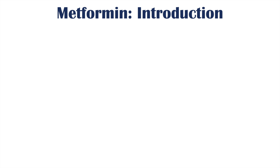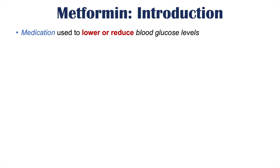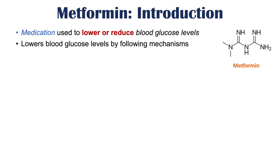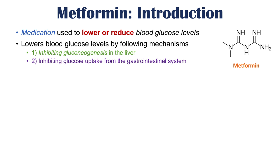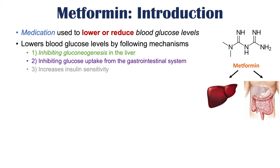Metformin is a medication used to lower or reduce blood glucose levels. It lowers blood glucose levels by several mechanisms, including inhibiting gluconeogenesis in the liver, which is the production of new glucose from other nutrient substrates. Metformin also inhibits glucose uptake from the gastrointestinal system, and it increases insulin sensitivity — multiple mechanisms to lower the blood glucose level, which is important when metformin is used for conditions like type 2 diabetes and polycystic ovary syndrome.